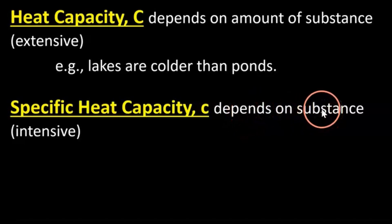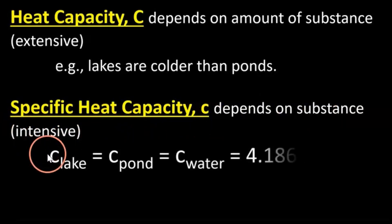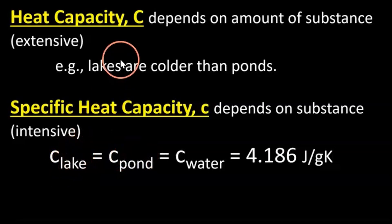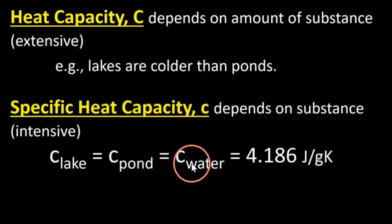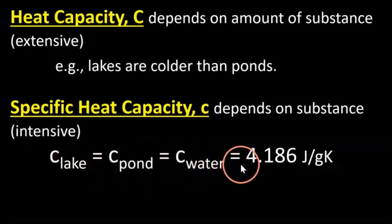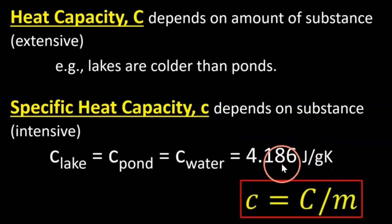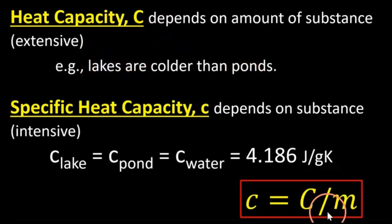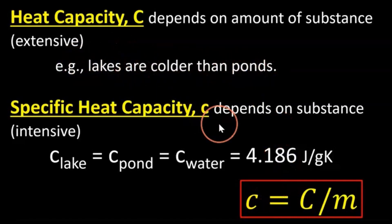Specific heat capacity depends on the type of substance, not how much there is — so it's intensive. The specific heat capacity of a lake equals the specific heat capacity of a pond, which equals the specific heat capacity of water, because they're all just made of water. That has a defined value of 4.186 joules per gram Kelvin. The specific heat capacity equals the total heat capacity divided by the mass.